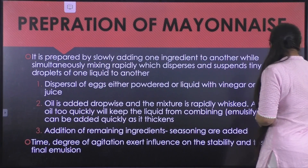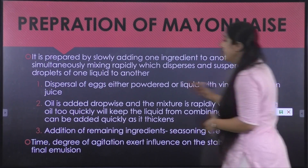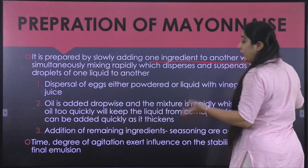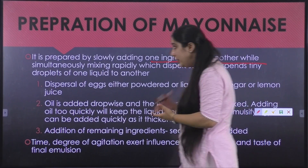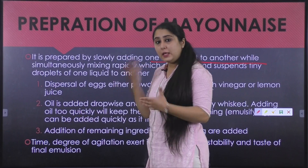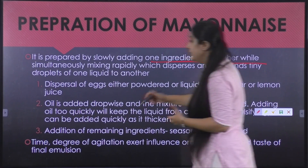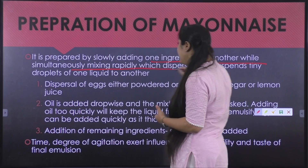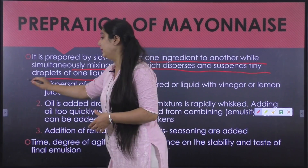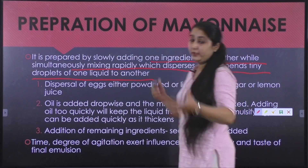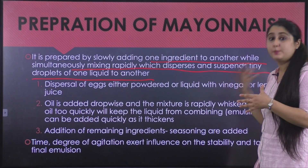Preparation of mayonnaise: it is prepared by slowly adding one ingredient to another, while simultaneously mixing rapidly, so that we can disperse and suspend tiny droplets of one liquid into the other. We are adding one liquid into the other with continuous stirring so that it is dispersed.